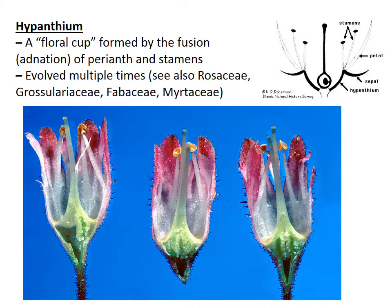The hypanthium is a particular floral structure formed by the fusion of the perianth and the stamens in such a way that it forms a floral cup encircling the ovary. In the drawing on the upper left, you can see exactly how that works, with the base of the stamens, petals, and sepals all fused to form this single structure that goes all the way around. This feature has evolved multiple times, including in the Rosaceae, the Grossulariaceae (currants and gooseberries), Fabaceae (legumes), and the Myrtaceae family, and it's a really useful feature for identification.